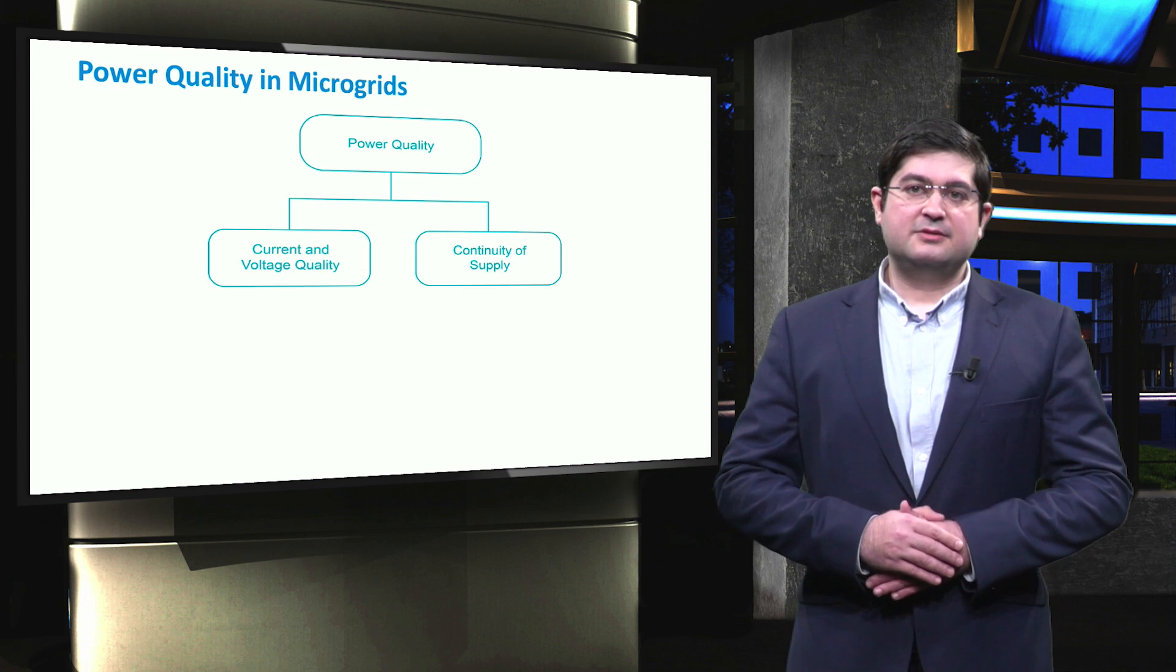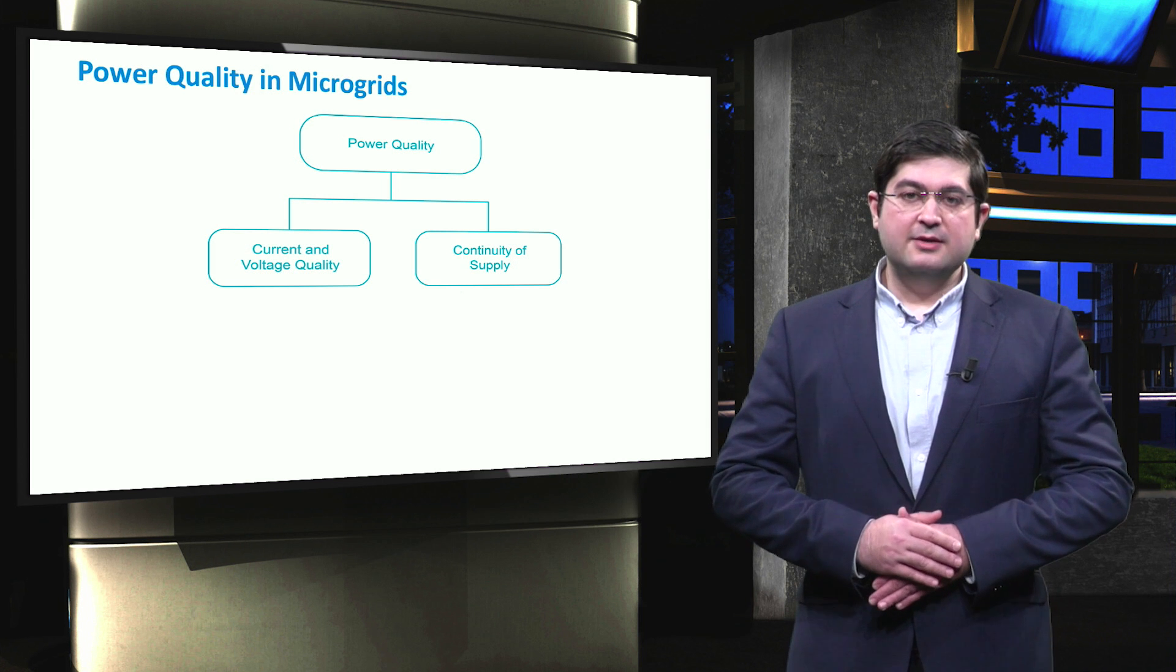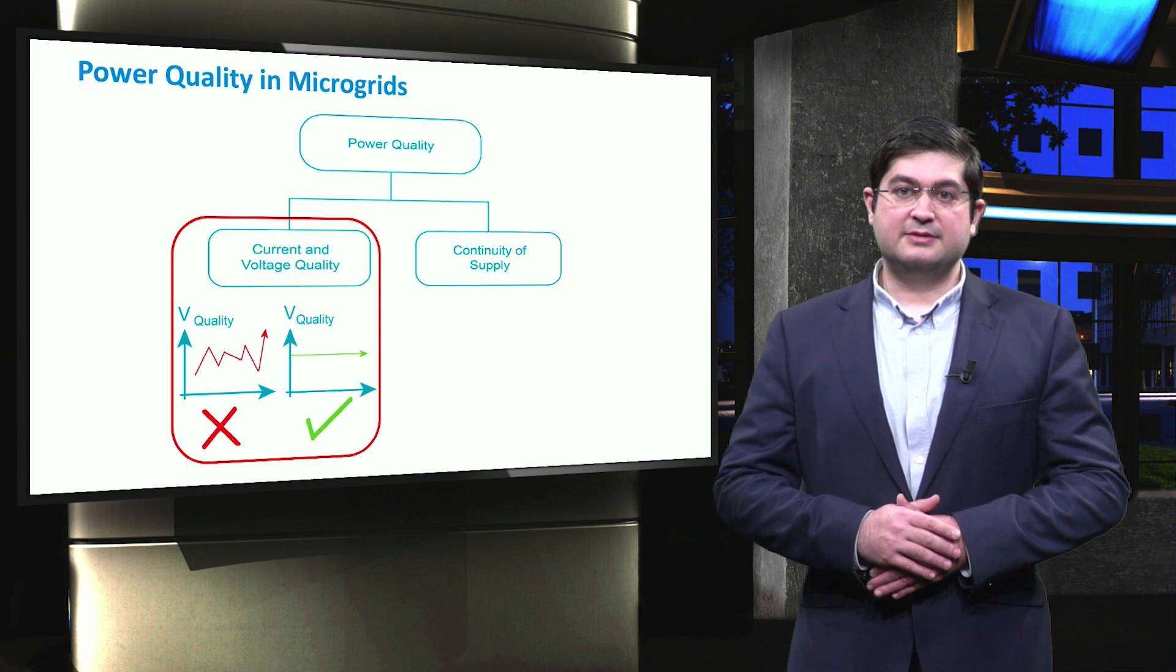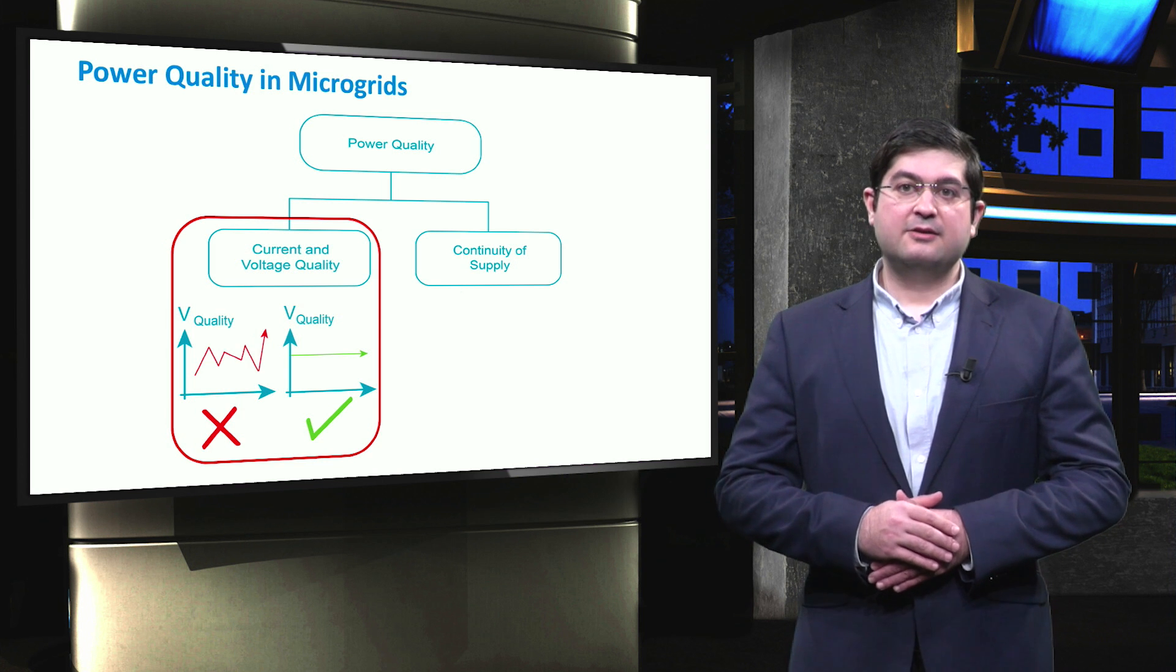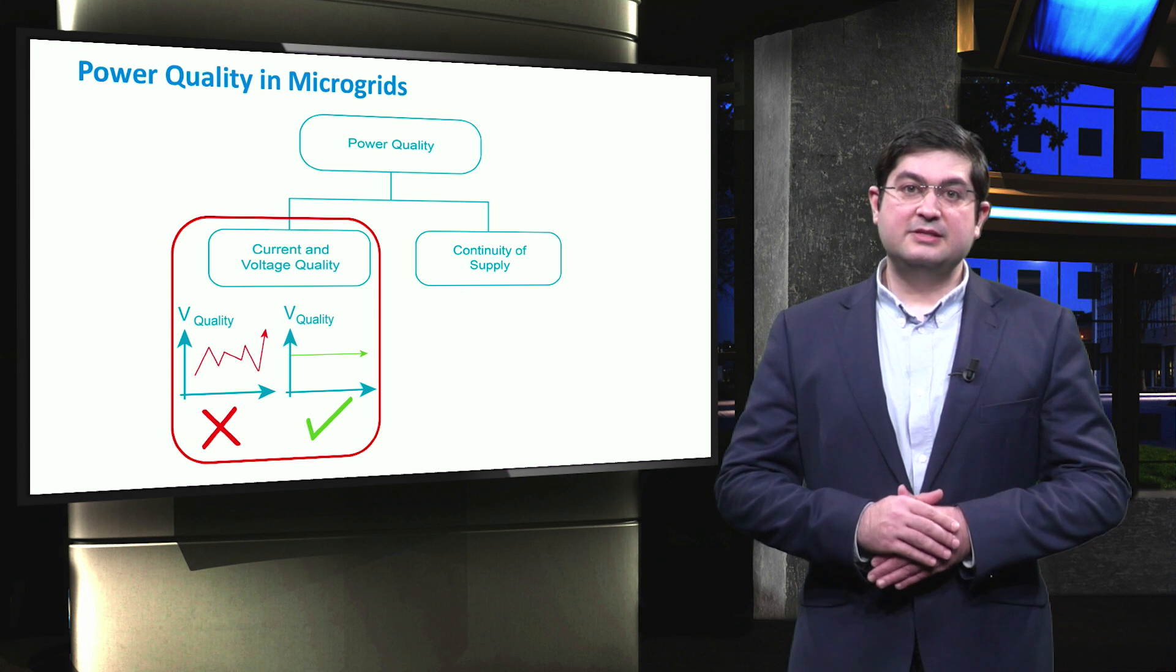In general, the topic of power quality in microgrids can be divided into two parts. The first part is the current and voltage quality according to EN 50160 standard, which we will detail in this video.